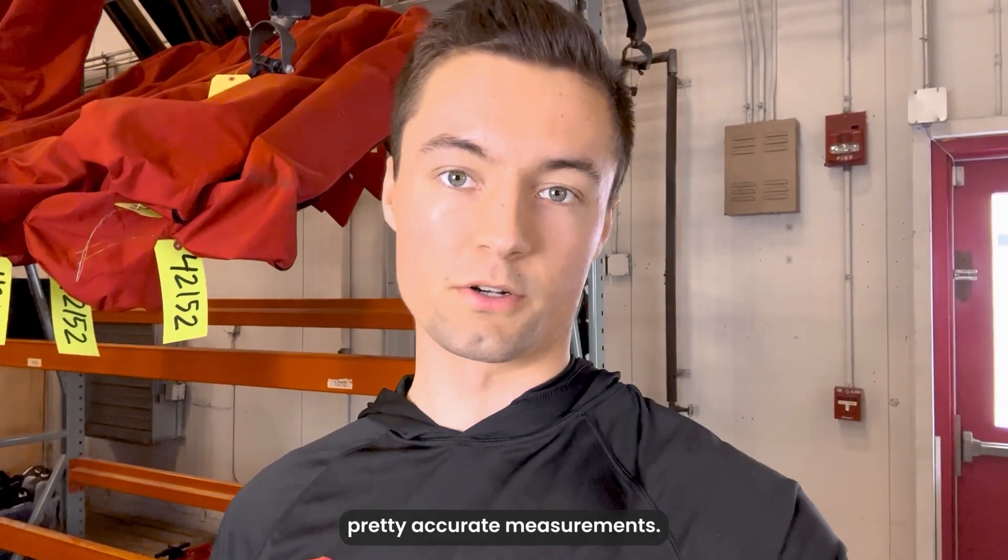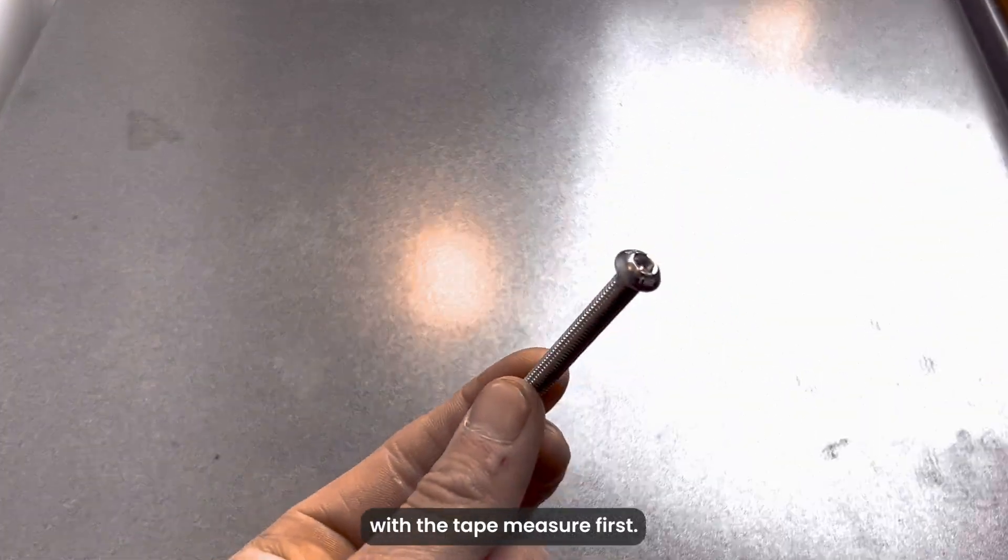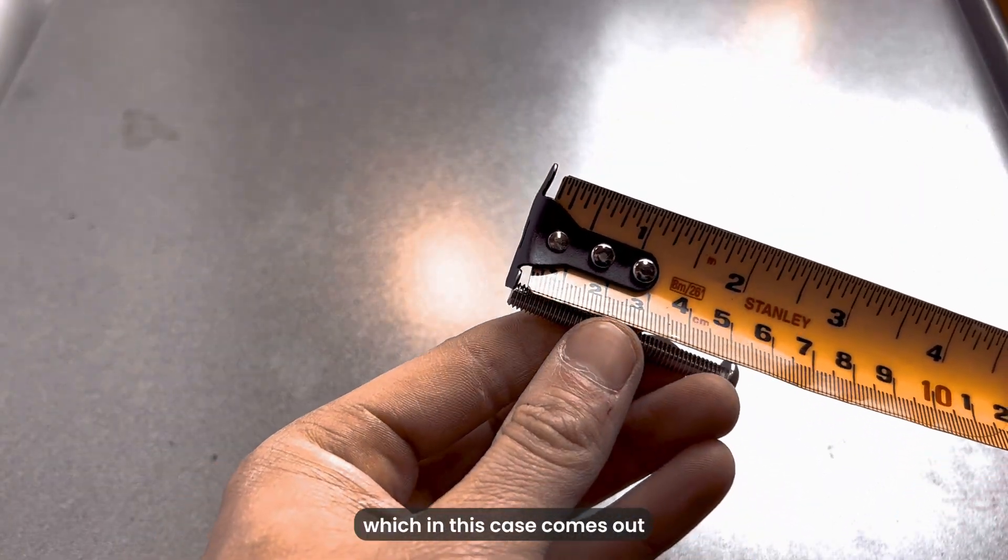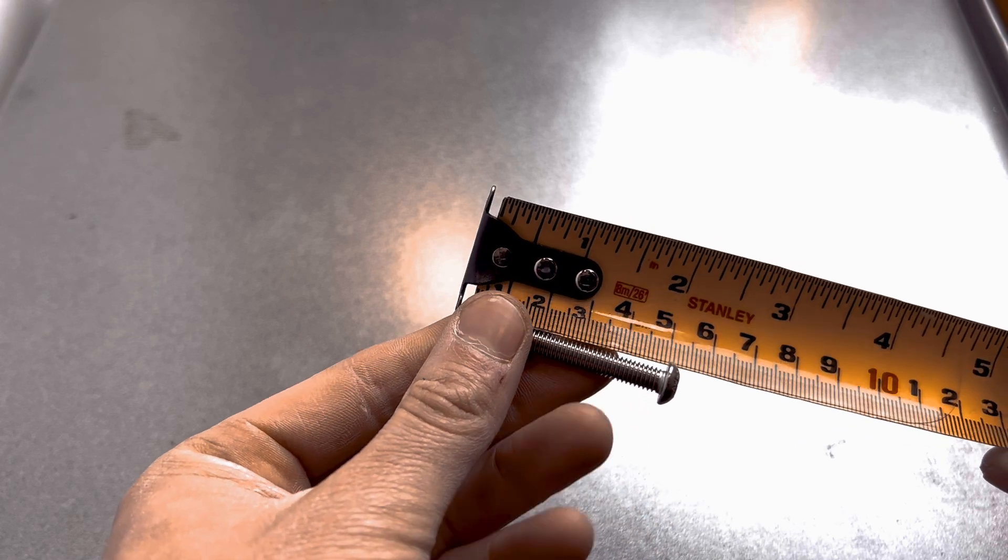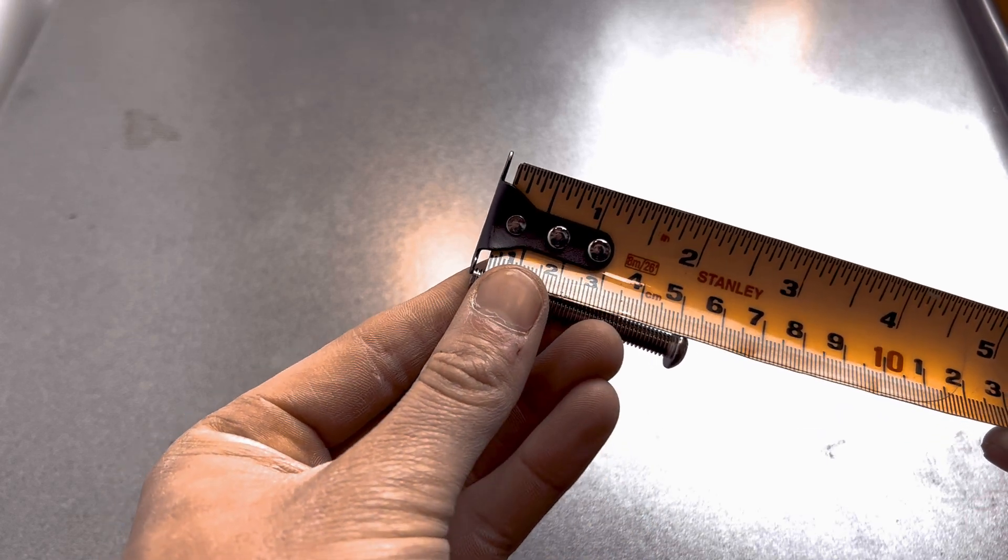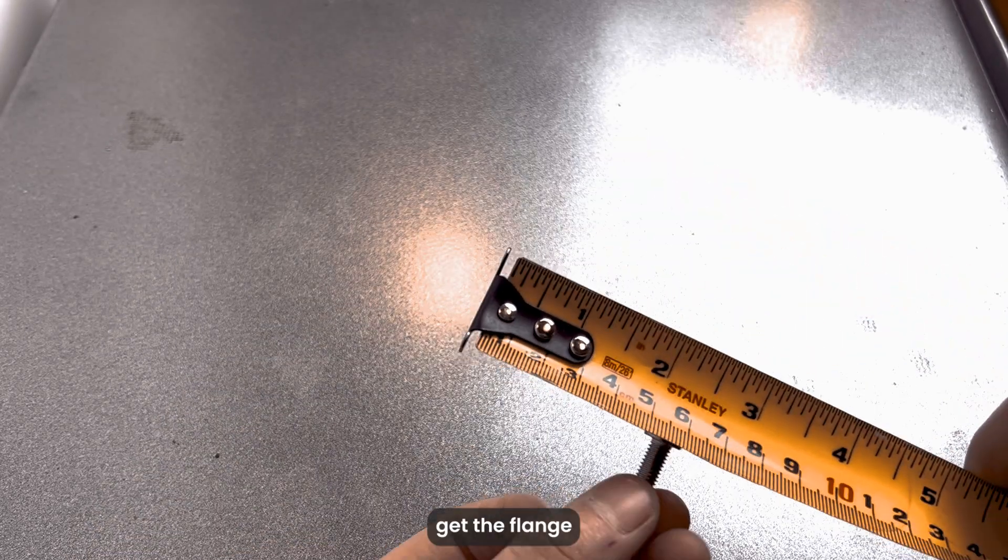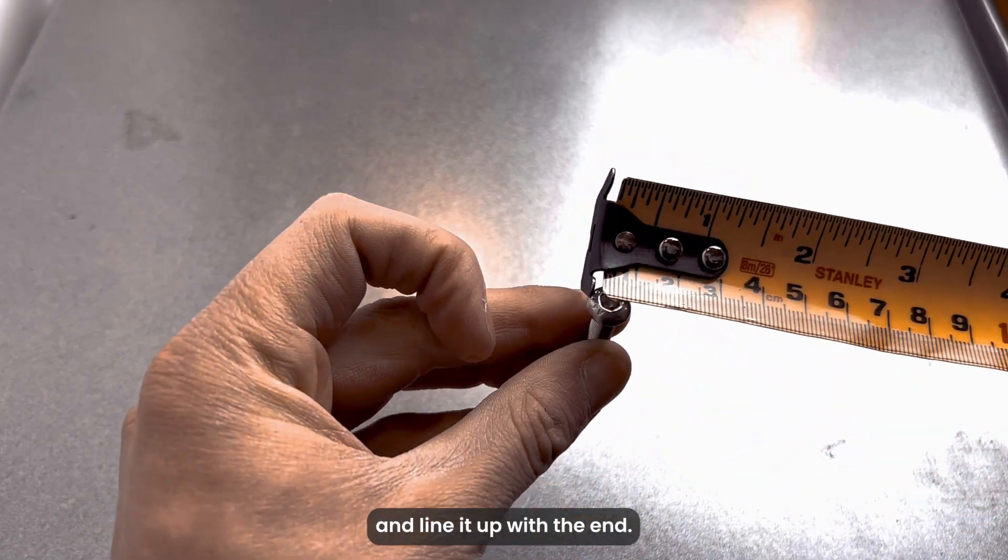All of them will give you pretty accurate measurements. Here we have our bolt and we'll measure with the tape measure first. For the length, just measure to the bottom of the flange, which in this case comes out to about 50 millimeters. For the width, get the flange on top of the tape measure and line it up with the end. In this case we get about six millimeters.